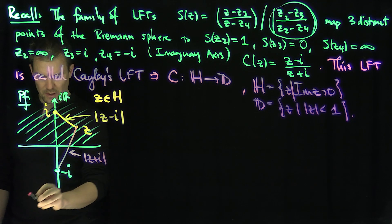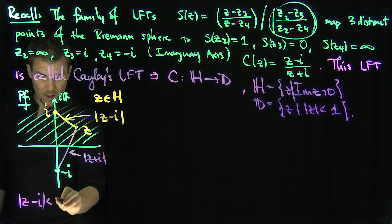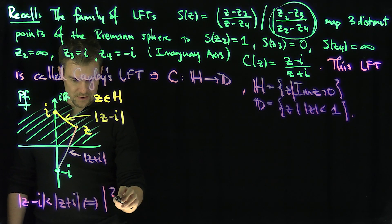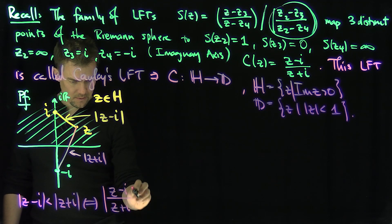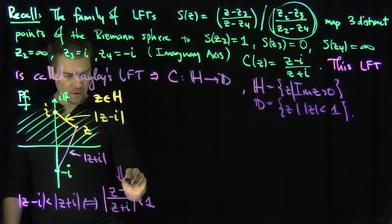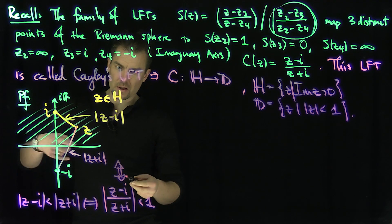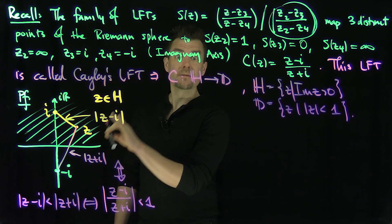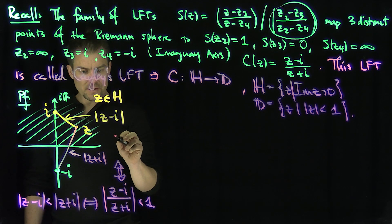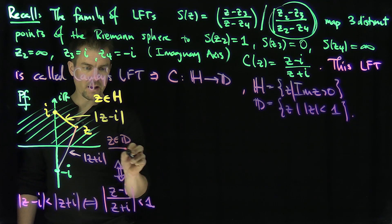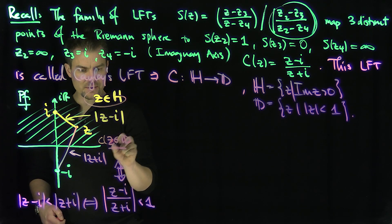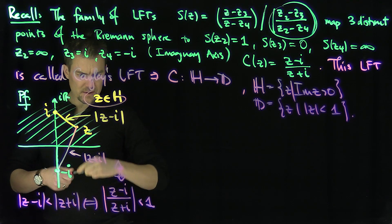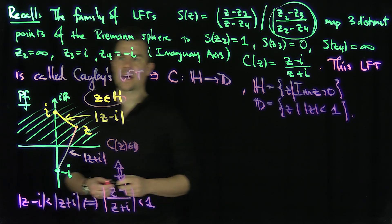From this configuration, it's clear that the modulus of Z minus i is actually smaller than the modulus of Z plus i. This is exactly equivalent to saying the modulus of Z minus i over the modulus of Z plus i is less than one. This is not a rigorous proof, but it should be clear geometrically. LFTs are all about geometry, and I drew this picture so you can get a good sense of how to prove geometric properties using LFTs. So if Z is in H, then C of Z is in D.